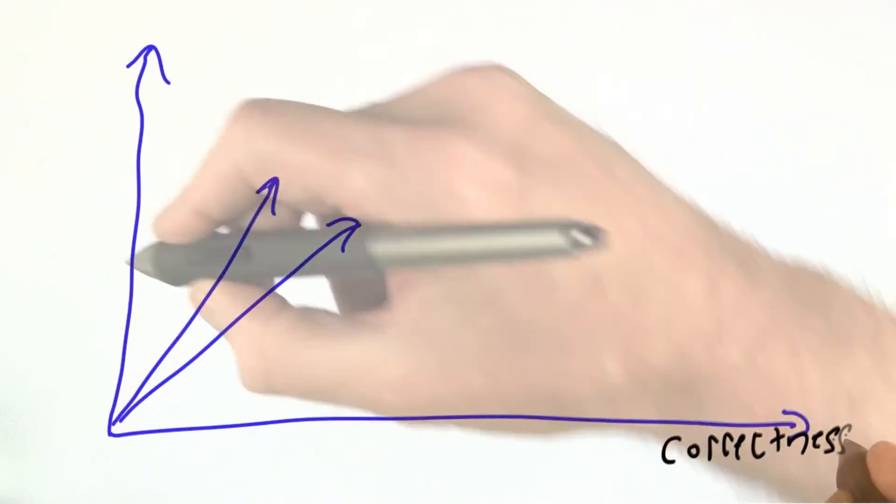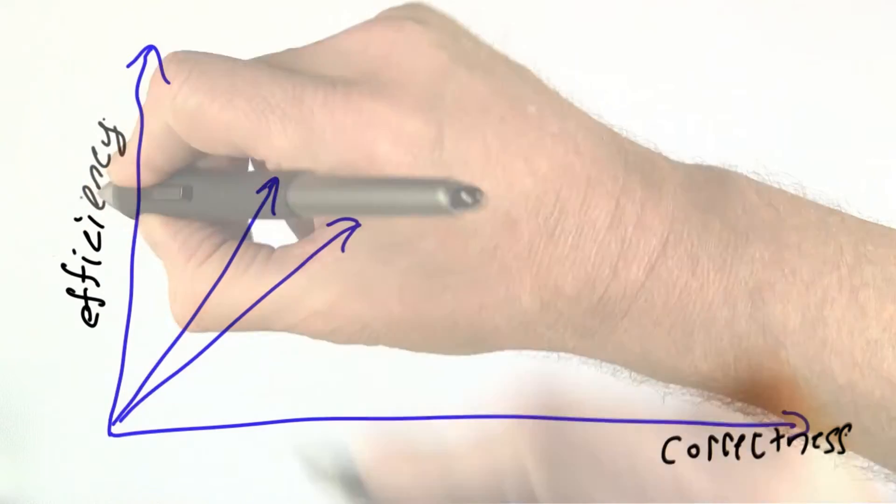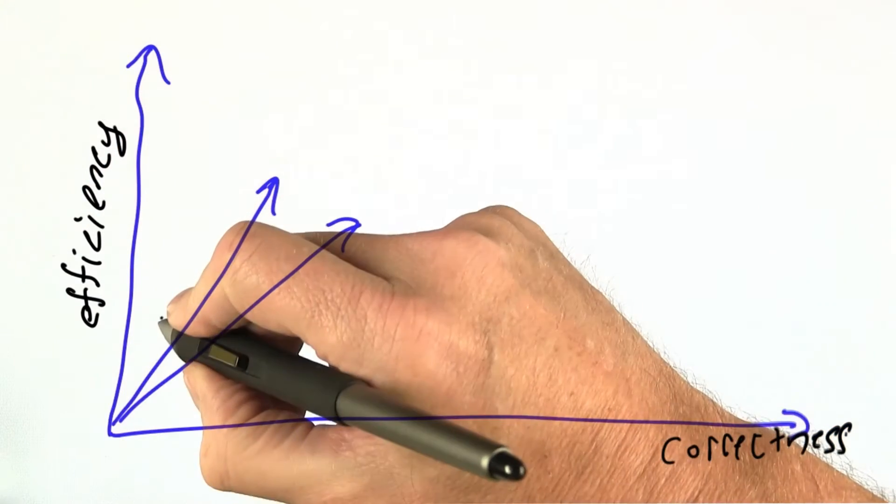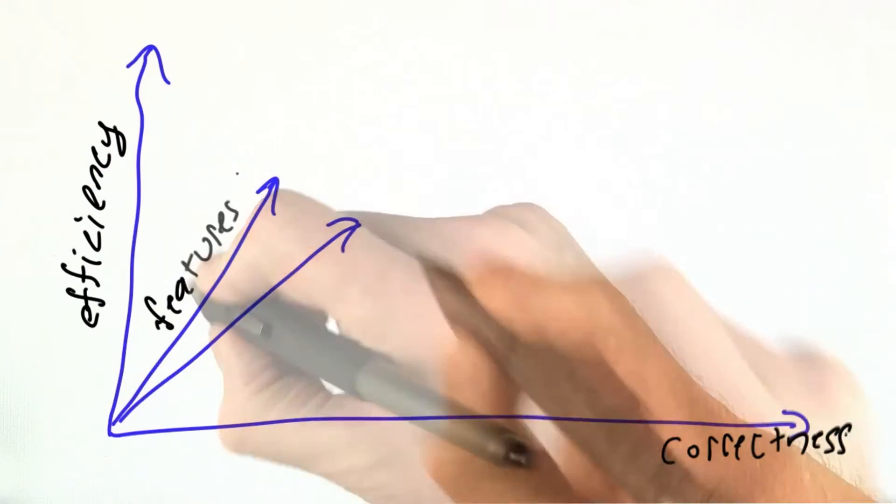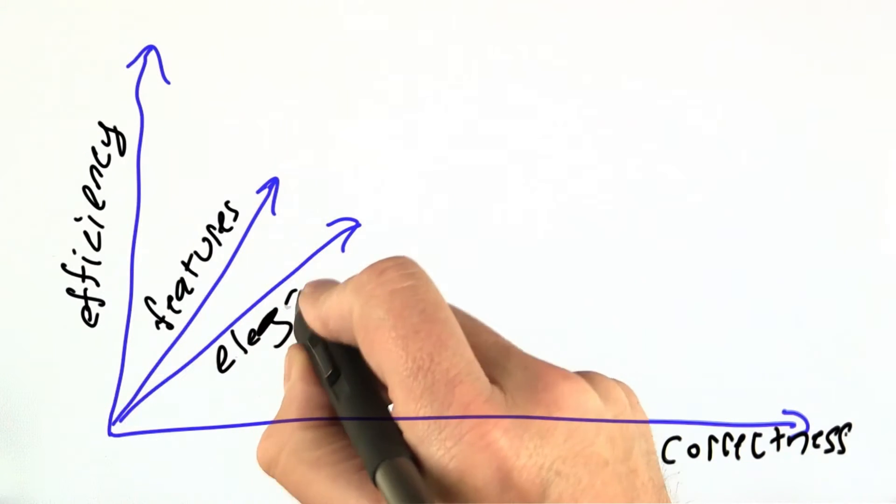Does the program do the right thing? Another axis is efficiency. Does it do it fast enough? Another axis is features. What exactly does it do? Another one is elegance.